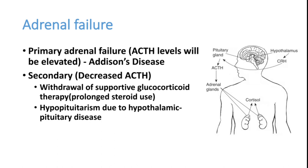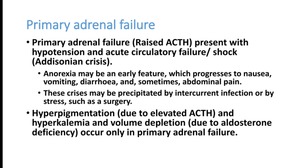Clinical findings may be similar in both types, but ACTH levels will be increased in primary and decreased in secondary. In primary adrenal failure, raised ACTH is present with hypotension, acute circulatory collapse, and shock — otherwise called Addisonian crisis. Patients can also have anorexia with progressive nausea, vomiting, diarrhea, and abdominal pain.